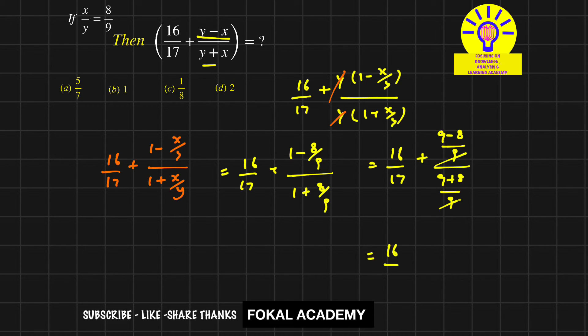It becomes 16 by 17 plus (9 minus 8 means 1) 1 by (9 plus 8 is 17), that's equal to 17 by 17, that's equal to 1. So this value equals 1. From the options, option B is the correct option.